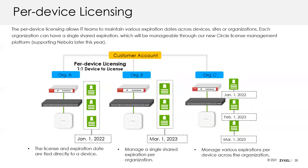One of the other recent changes we've made is that we now do per-device licensing. If you're going to use Plus or Pro Pack, every device at that customer needs to have a valid license. If you try to mix and match licenses, every device will function at whatever the lowest level of licensing is for that customer. So if you want to do Pro Pack, every device needs a Pro Pack license; if you want to do Plus Pack, every device needs a Plus license.